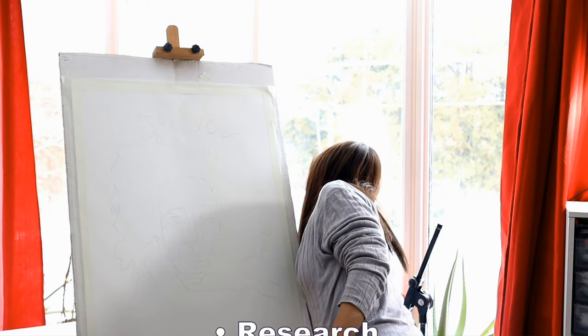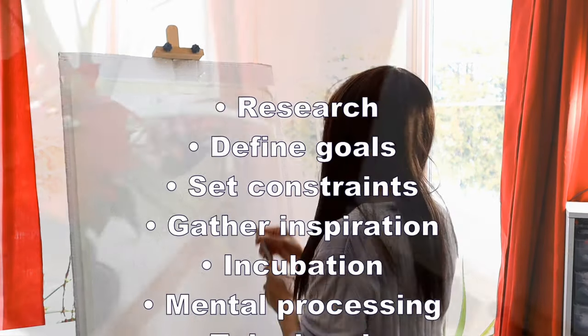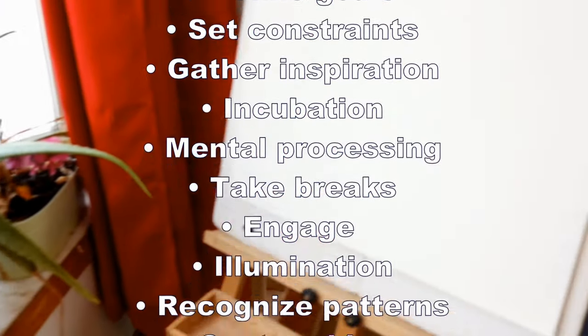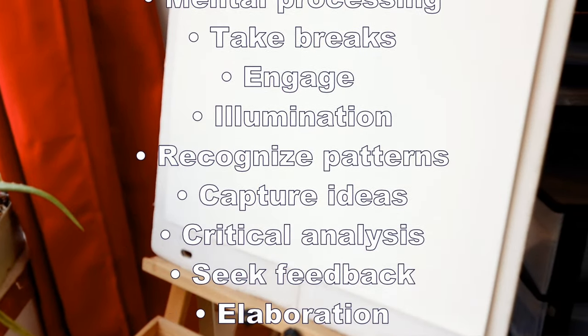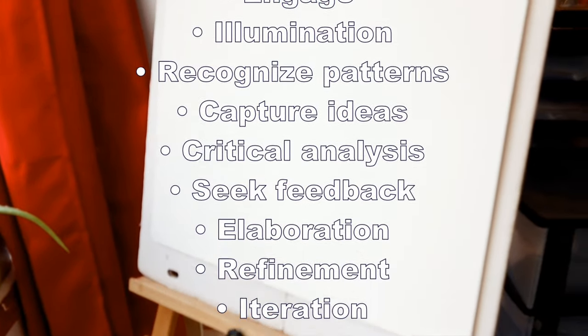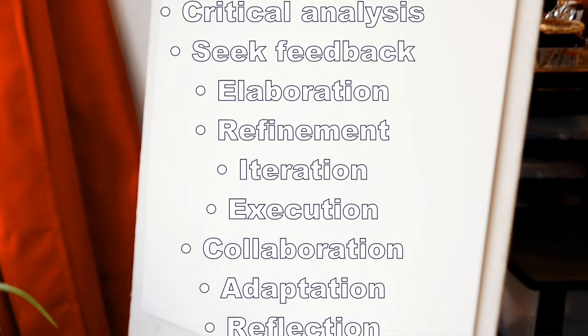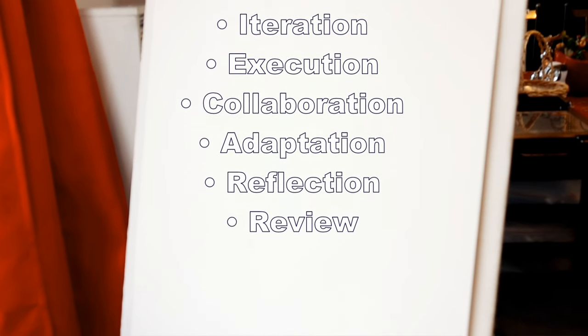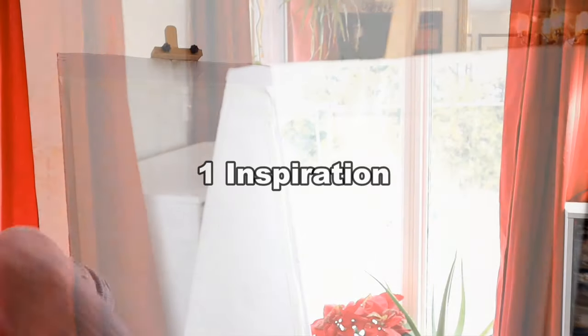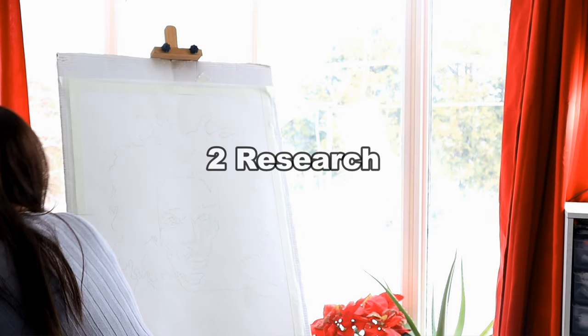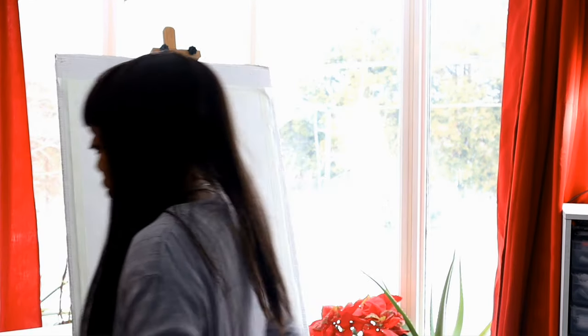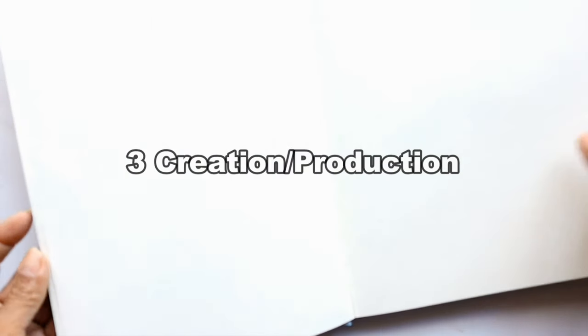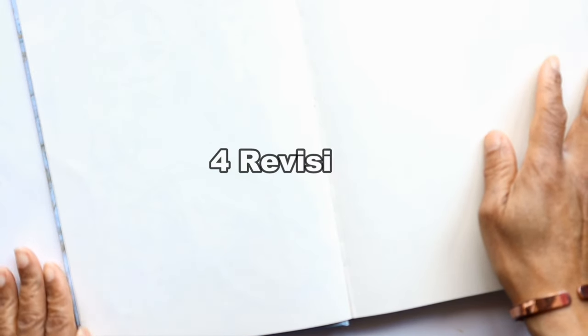Everyone has their own way of doing things, and when you look at the term creative process, you'll often find numerous steps explaining it. For our purposes, I'm going to break it down into a few simple parts: 1. Inspiration, 2. Research or Preparation, 3. Creation, 4. Revision, 5. Celebration.